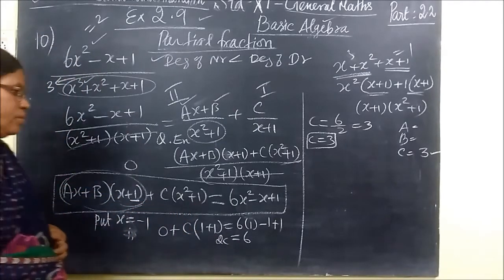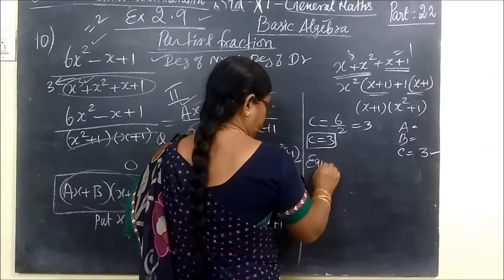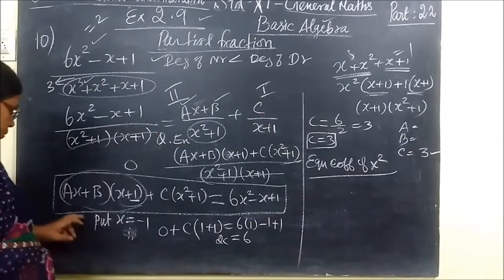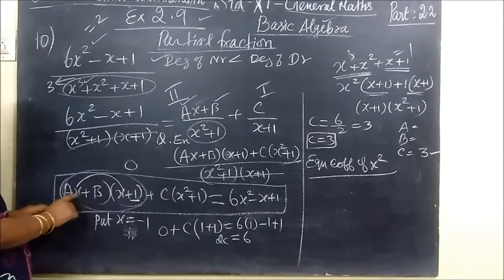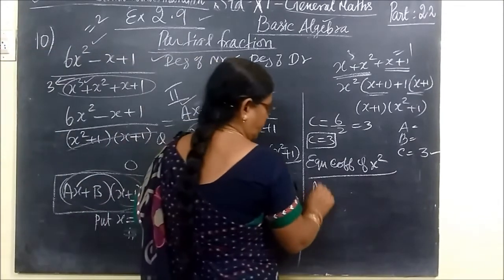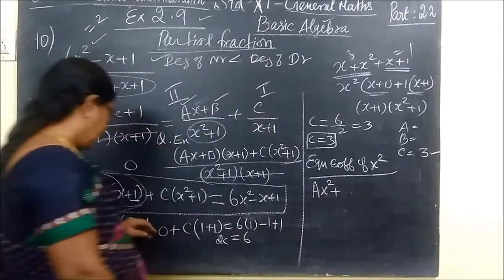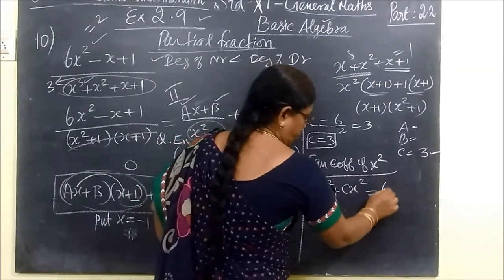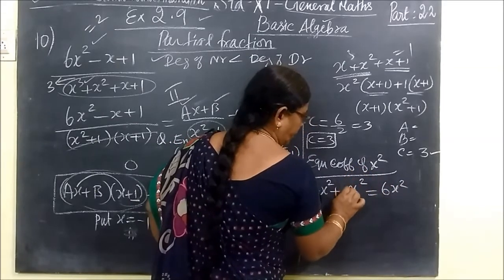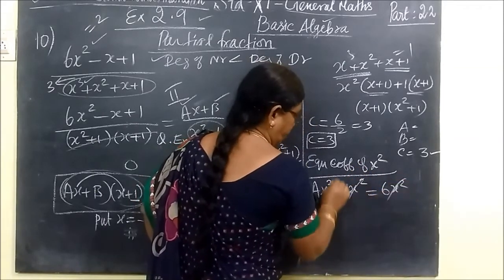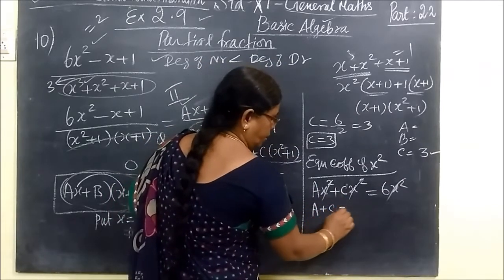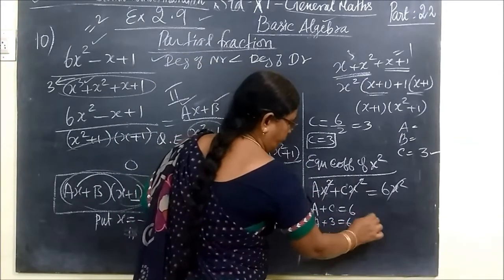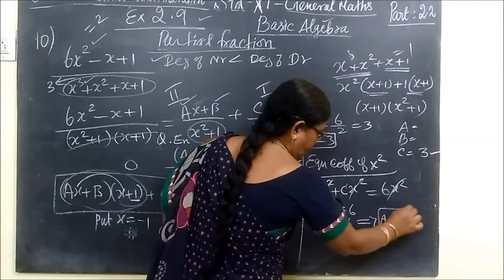Then next is put x equal to 0 and equality coefficient of x square. So A x square plus C x square, this is x square term, 6 x square. So we are equating x square term. Therefore A plus C equal to 6. C value already, so A plus 3 equal to 6, which implies A equal to 3.